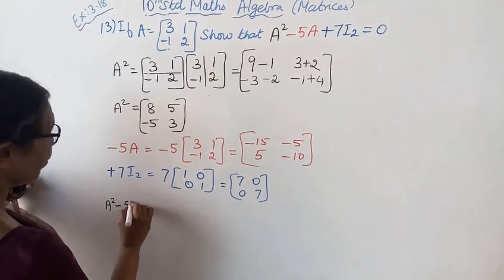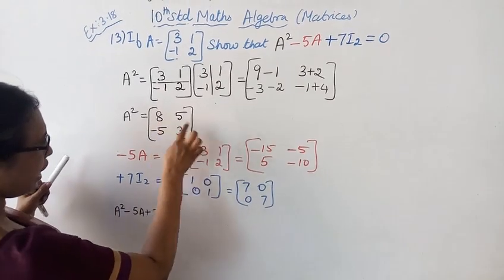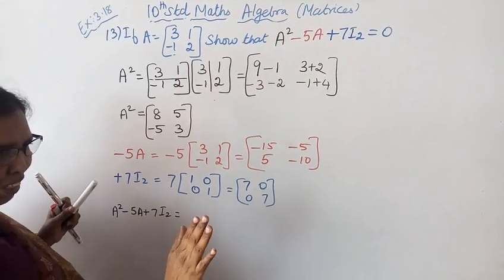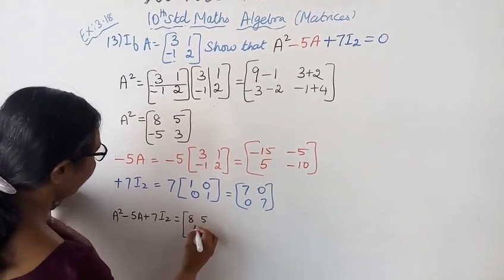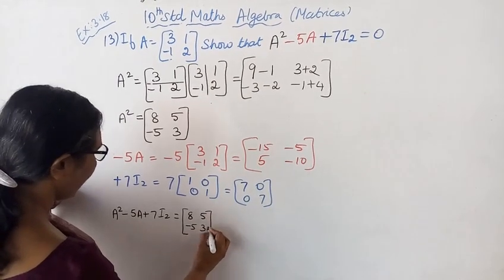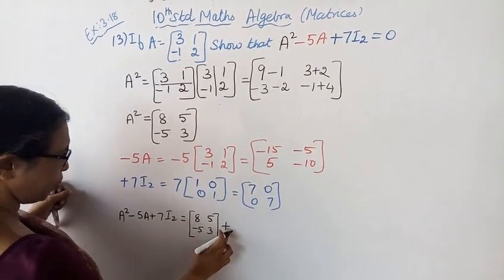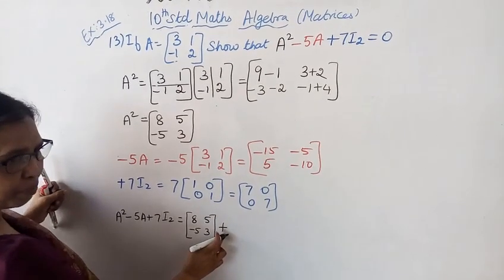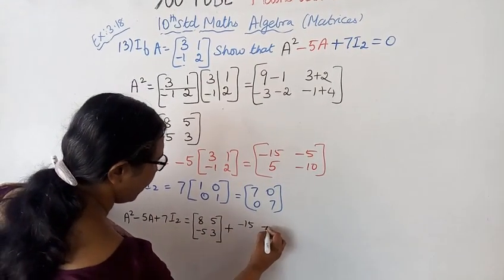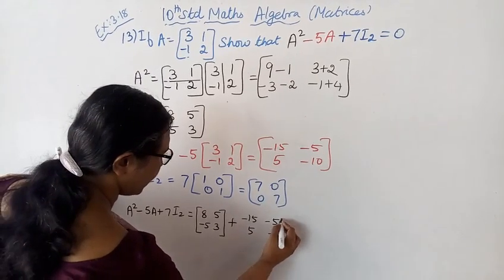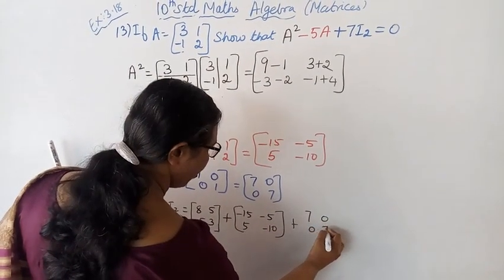Now we add A squared, minus 5A, and plus 7I₂ together: [[-15, -5], [5, -10]] plus [[7, 0], [0, 7]]. Computing: -15 + 7 = -8, adding all terms: -8 + 8 = 0, -5 + 5 = 0, 5 - 5 = 0, -10 + 3 + 7 = 0.